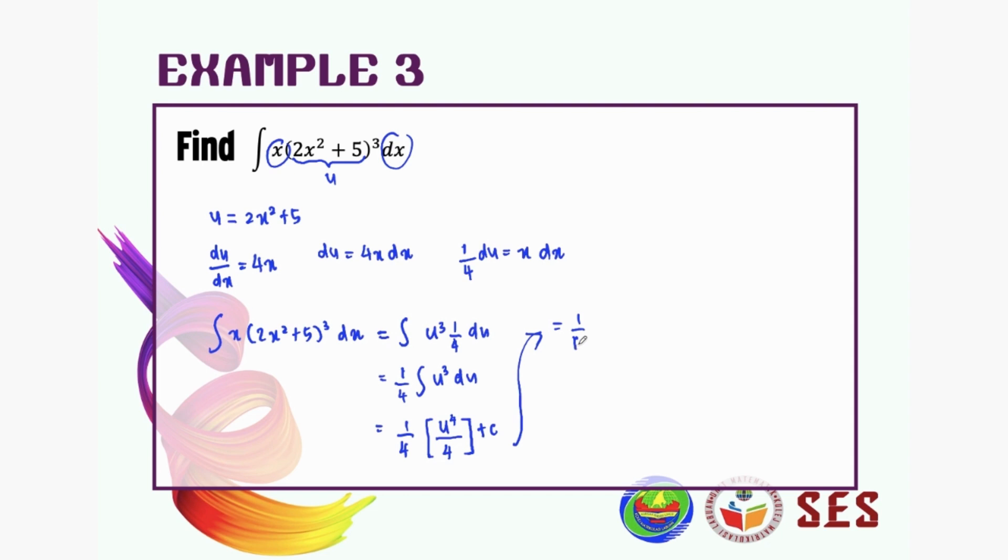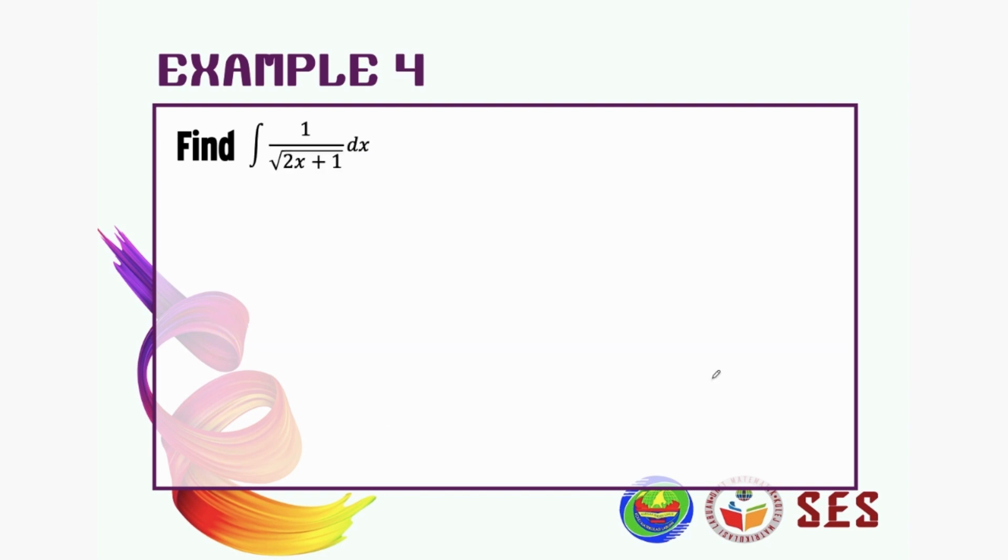And last step, don't forget to substitute back our u. So it becomes 1 over 16 times (2x squared plus 5) to the power of 4 plus c.